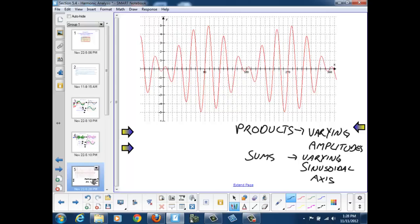So in this case it's pretty clear that we have a varying amplitude for our graph. So we're going to be working with a product.